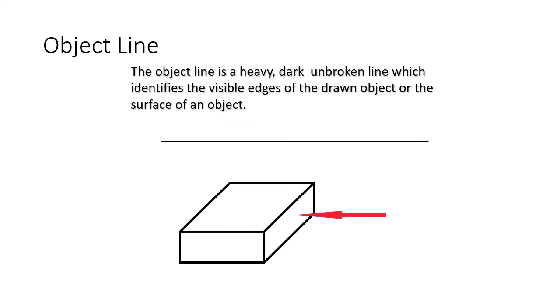An object line. The object line is a heavy dark unbroken line which identifies the visible edges of the drawing object or the surface of an object. So these ones just show us the things we can see. This is a block. We can see all of these edges. If it's a solid line like this, it means we can see it from this view.